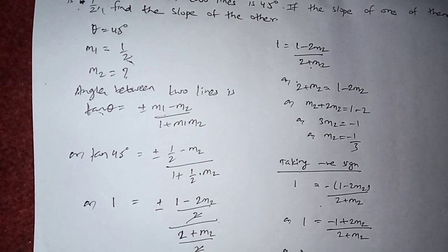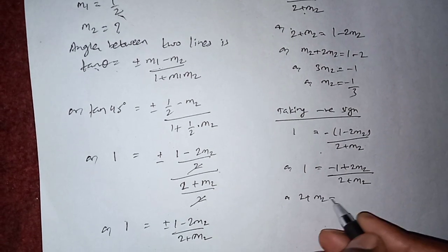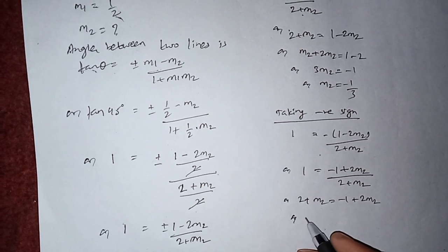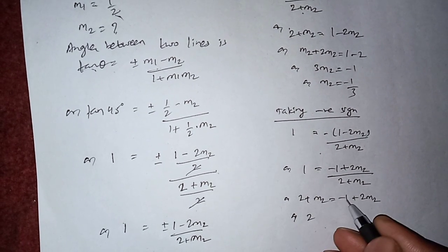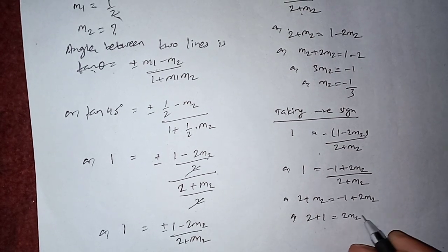We can cross multiply. 2 plus m2 into 1 will be 2 plus m2 equals to minus 1 plus 2m2. So this minus 1 bring to this side will be plus 1.